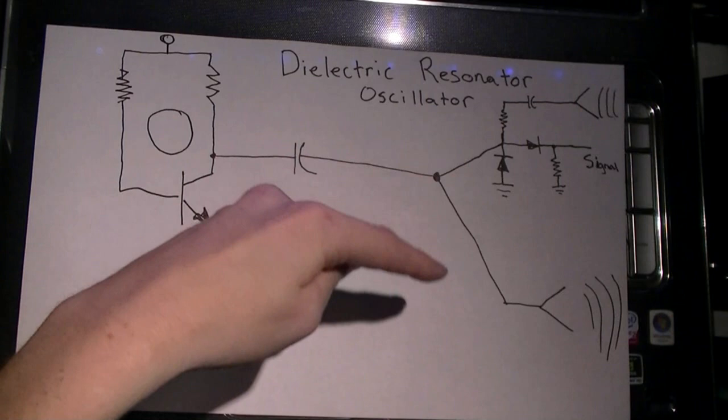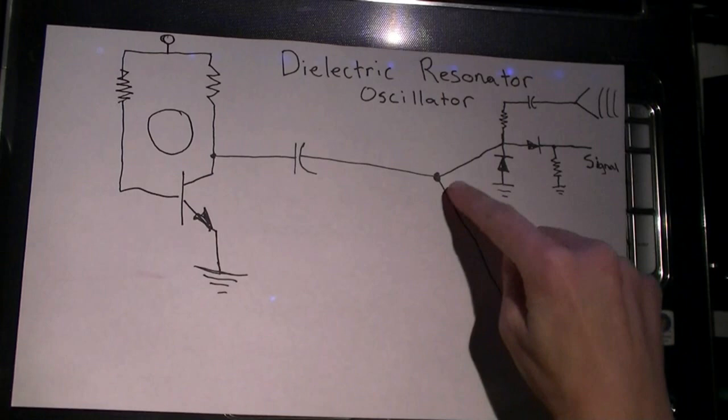Part goes to the transmit antenna, and the other part goes to a diode mixer, which is also hooked to a receive antenna.